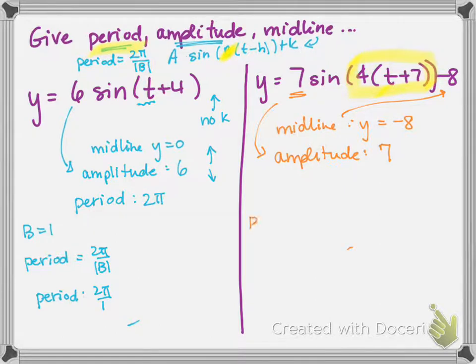So with my B value being positive 4, if I look at the period as 2π over the absolute value of B, I get that the period is 2π over 4, which simplifies to π over 2, or half a π. So my period for this problem, the time in which it takes to complete one full sine wave, is π over 2.